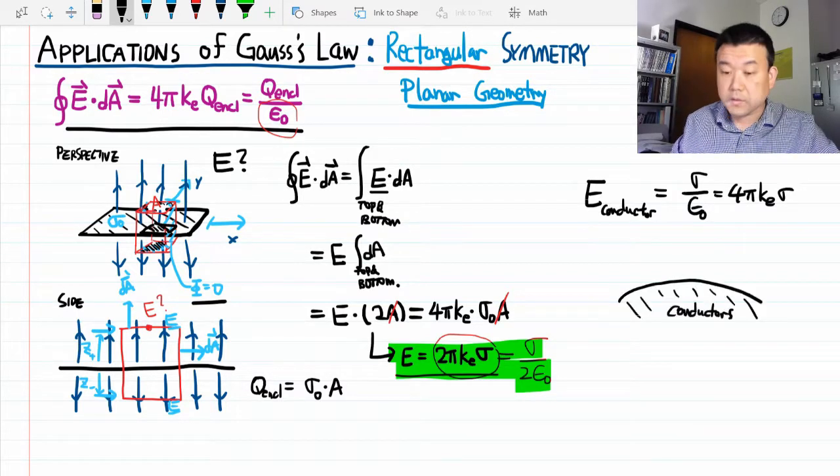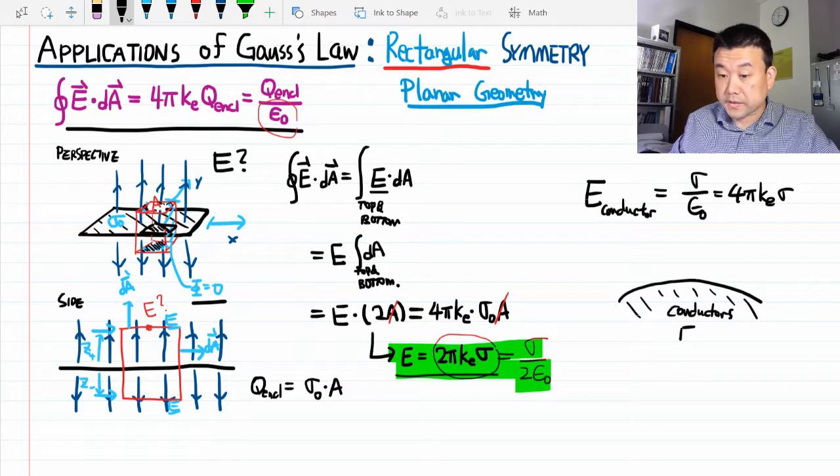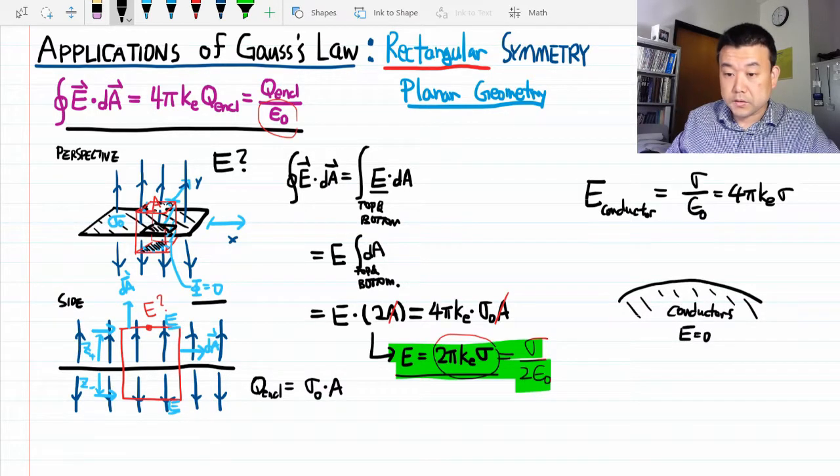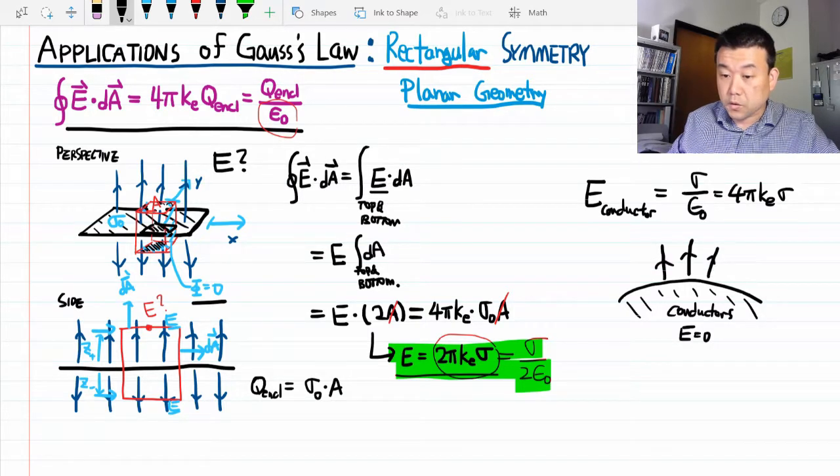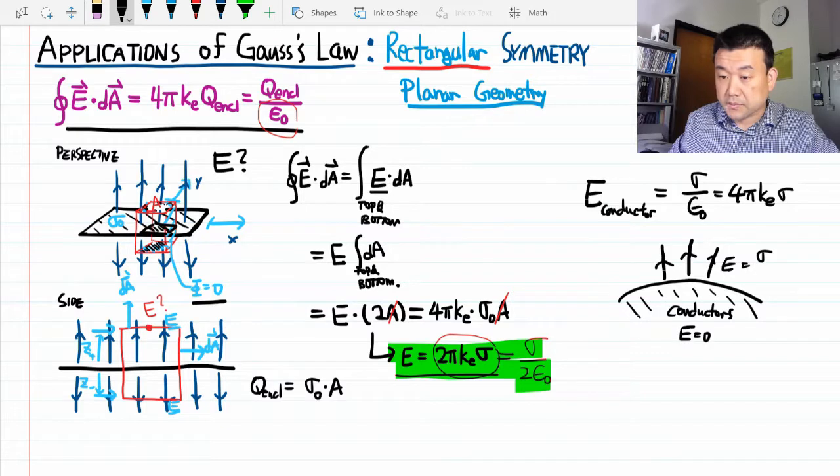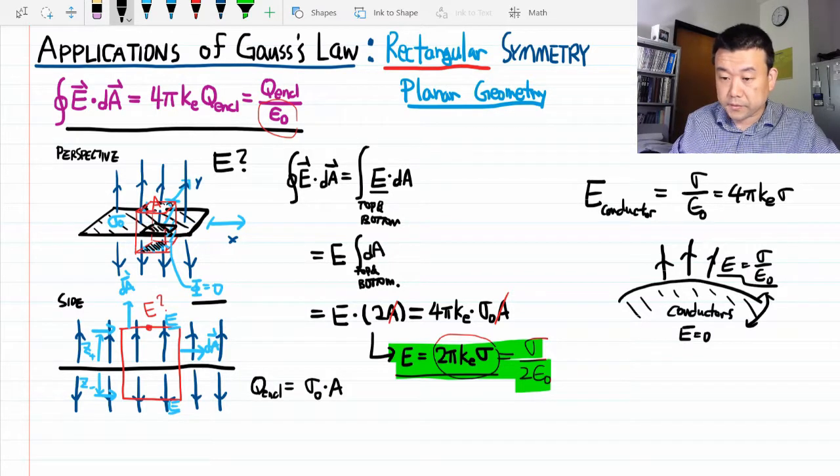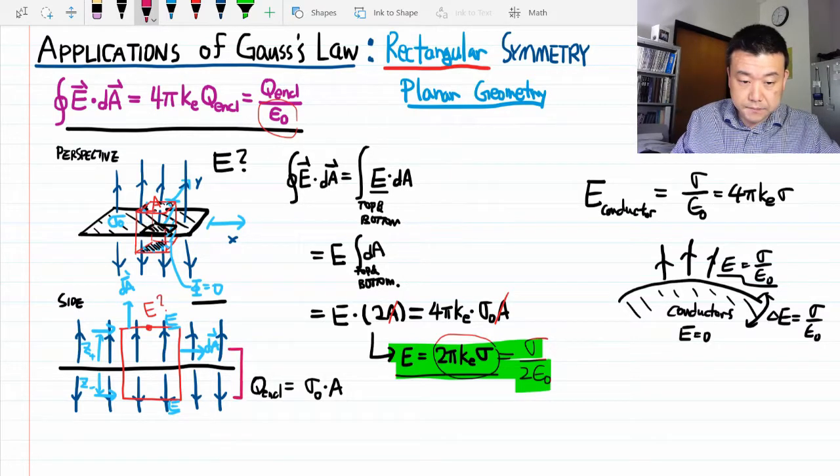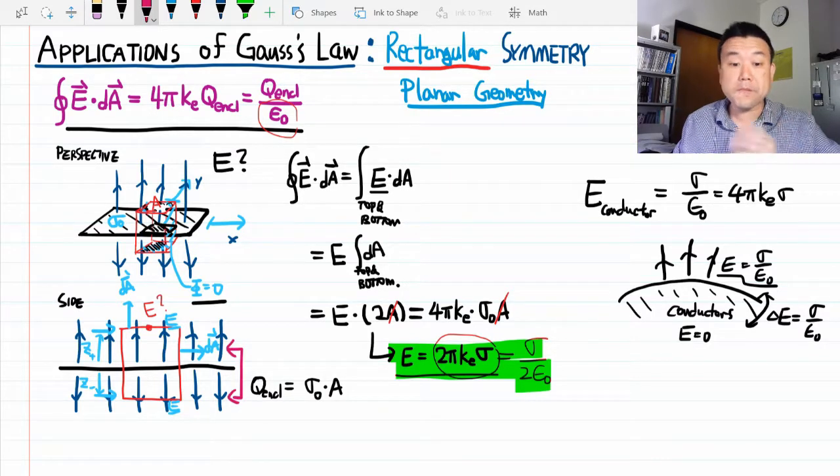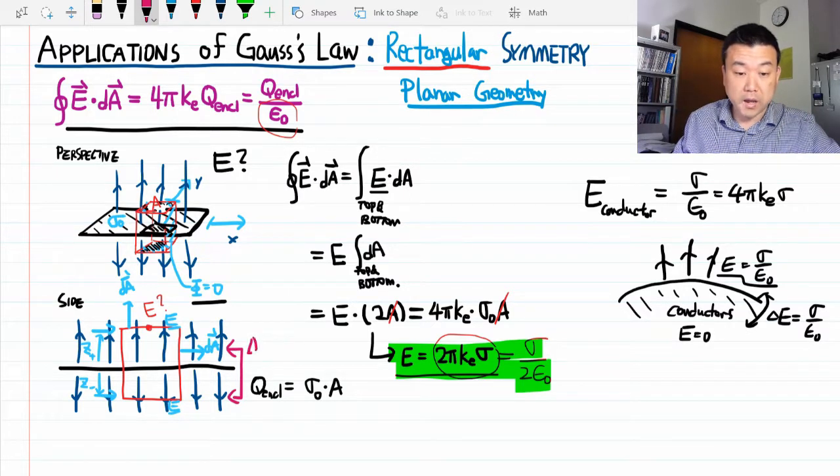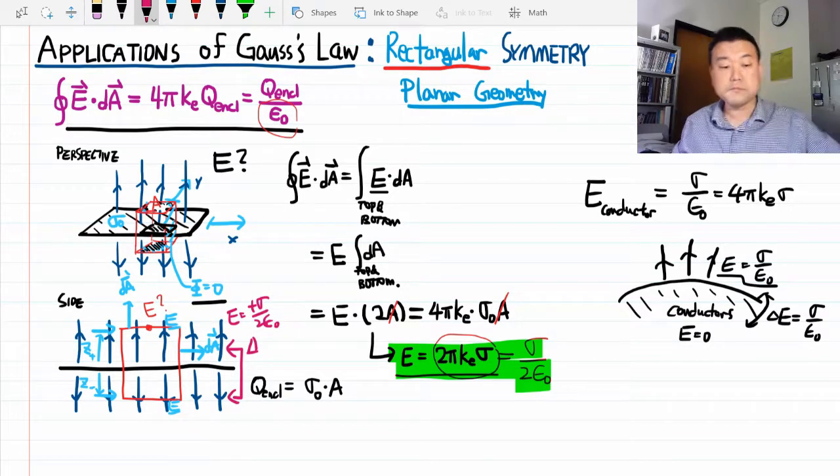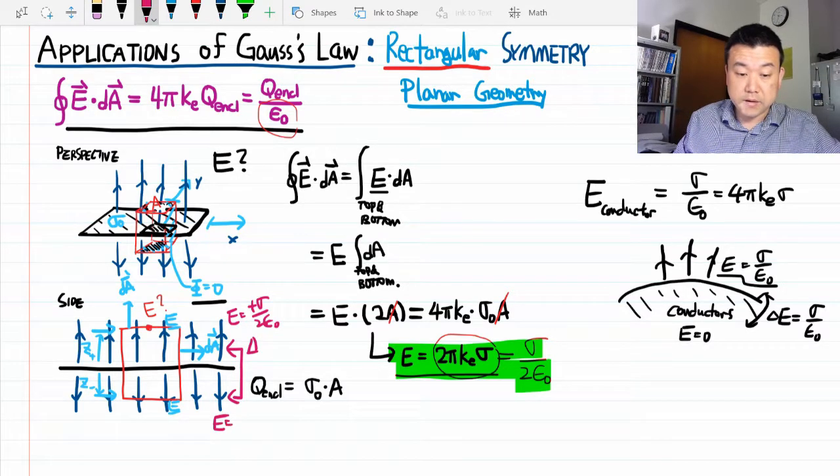With the conductors, the electric field inside the conductor is zero. So if you have electric field here of magnitude sigma over epsilon naught. Look at the difference in the electric field. It's the same difference. You see between the top and the bottom regions.